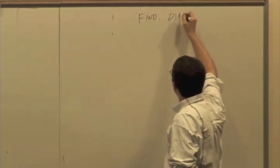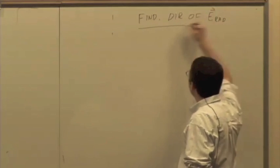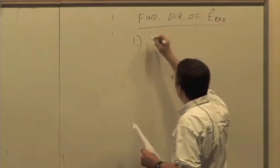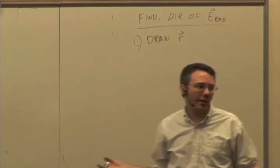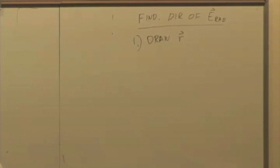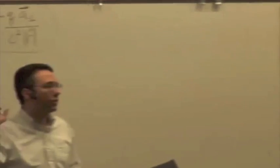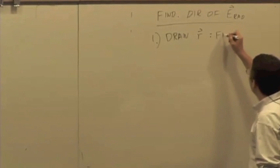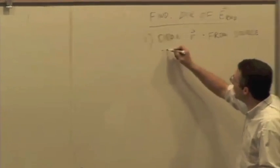Here are the steps for finding the direction of E radiative. Step 1: draw r. What's the vector r? Way back when we started calculating electric fields, it points from the source to the observation location. So r points, as usual, from the source to the observation location.